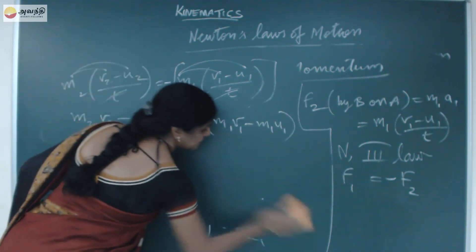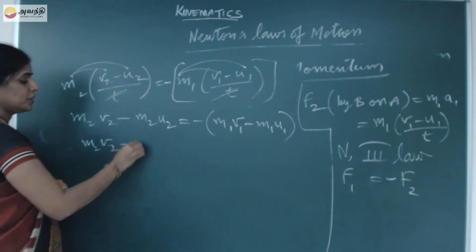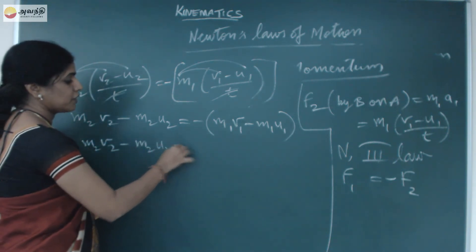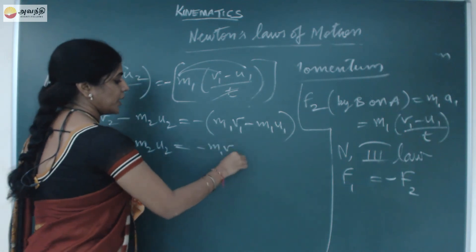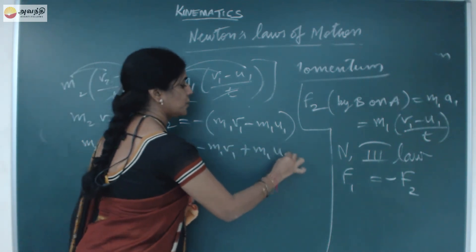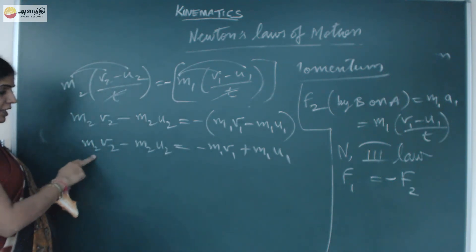So the negative will go. It will become m2 v2 minus m2 u2 equals minus m1 v1 plus m1 u1. Now you bring all the v terms to this side. m2 v2 is there, m1 v1 is there. If I bring this side it will become plus.